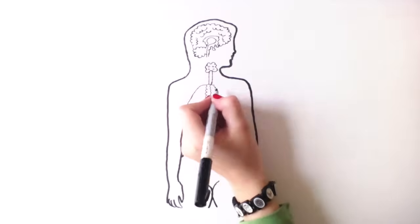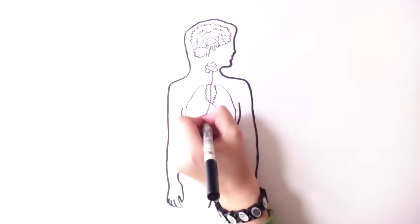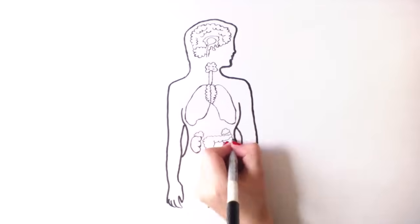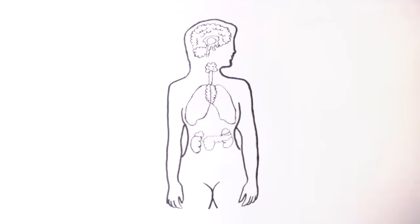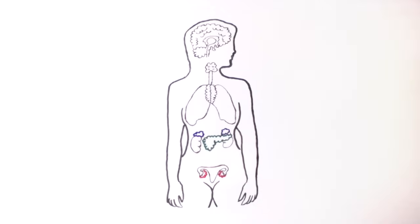We have many endocrine glands throughout our body and they secrete hormones. Hormone means to urge or excite, and that is exactly what they do. Hormones control when an adolescent starts puberty and how they feel during the process. Hormones determine how you handle stress, how you react to an emergency, and every single mood that affects you.